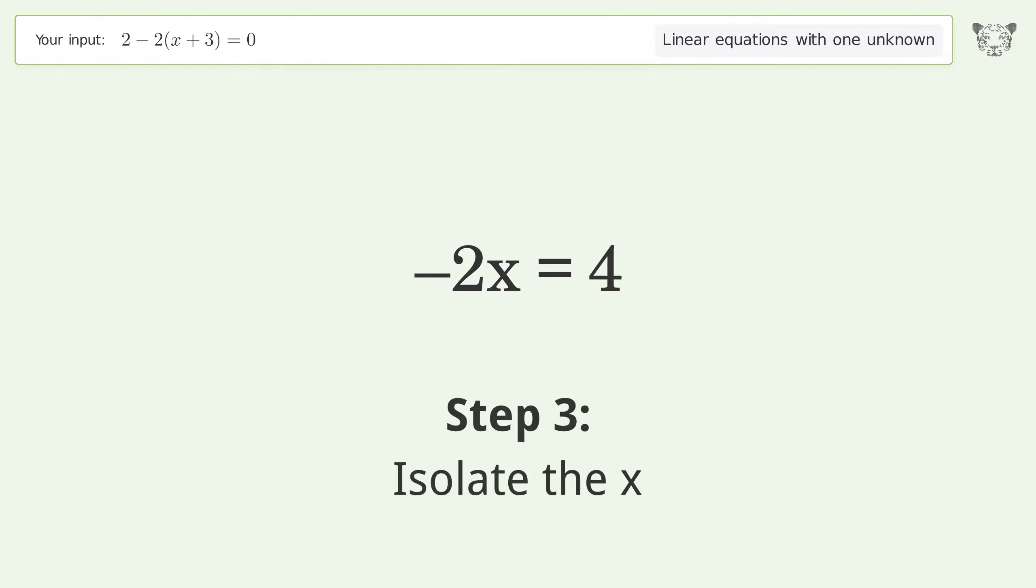Isolate the x. Divide both sides by negative 2. Cancel out the negatives.